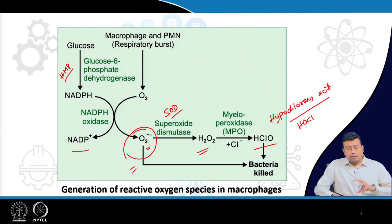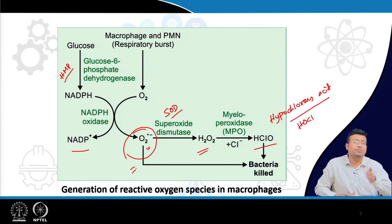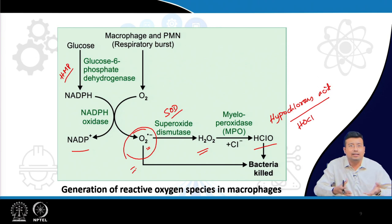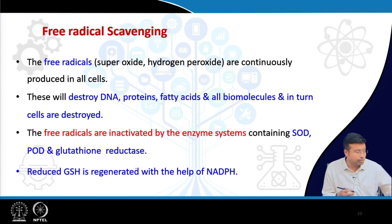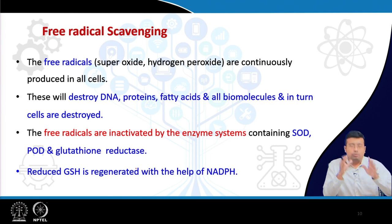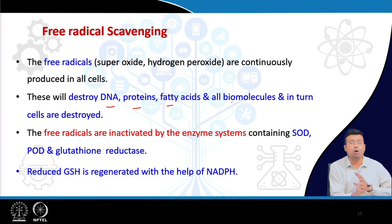There is a problem: once the bacteria are gone, the remaining reactive oxygen species left roaming in the system will attack our own RBC membrane. Free radicals generated need to be scavenged. Free radicals are constantly produced inside the cell and if left unchecked they will destroy DNA, proteins, fatty acids, and all biomolecules.